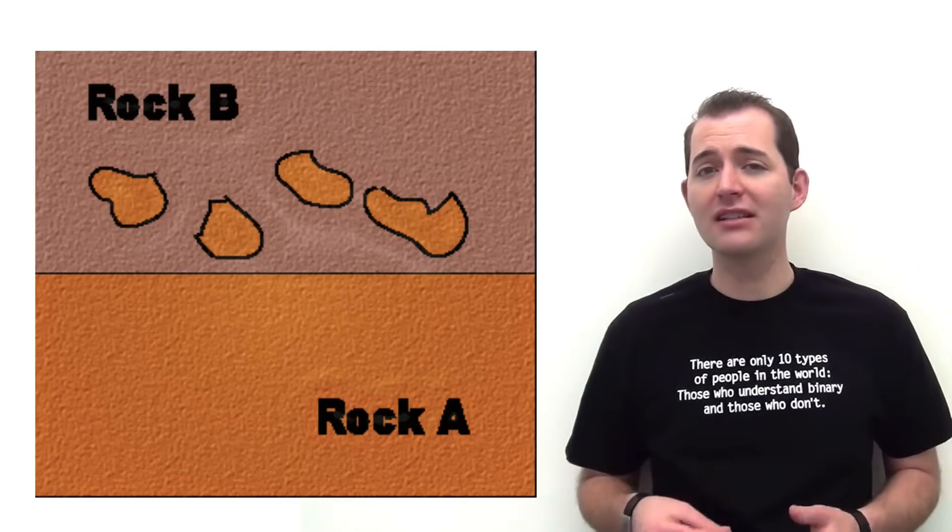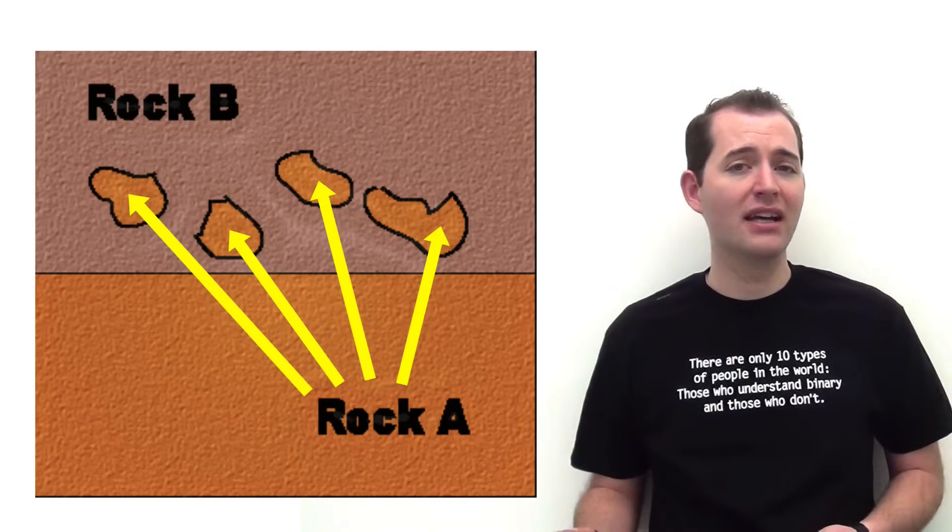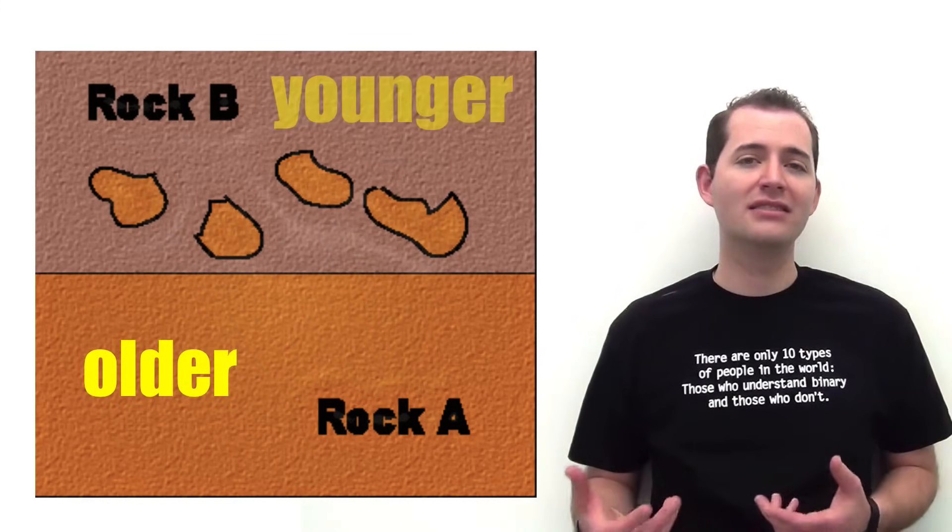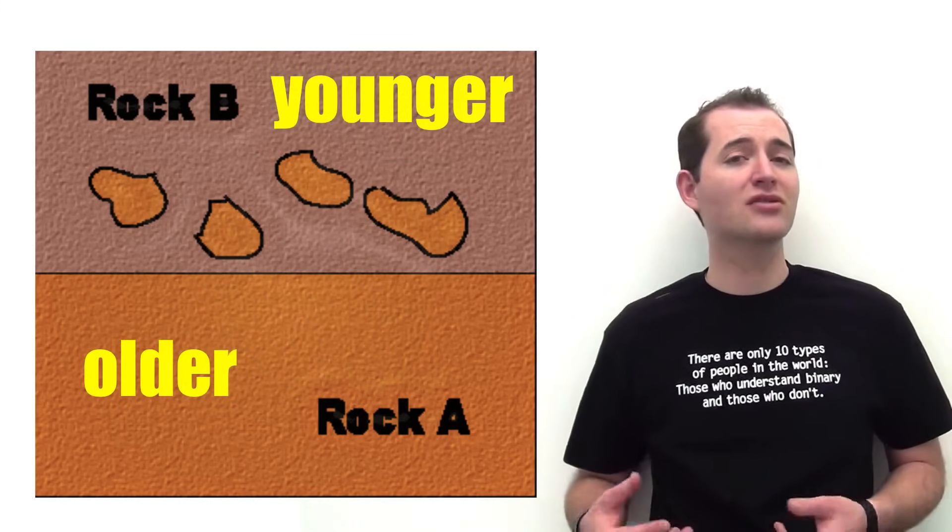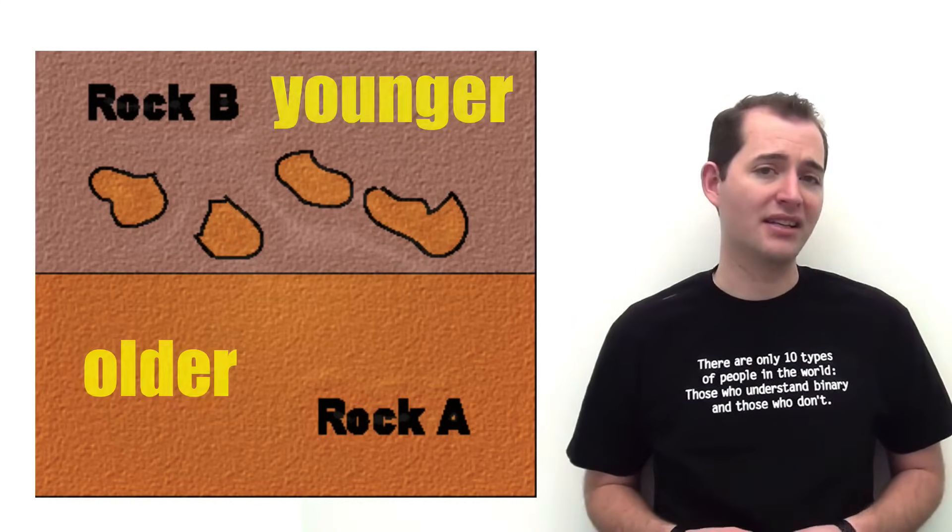For example, if we look at this diagram, pieces of rock A are inside of rock B. This means that rock A is older and rock B is younger. This is because rock A had to be around first so that it could be included inside of rock B.